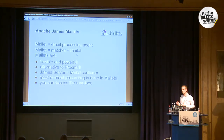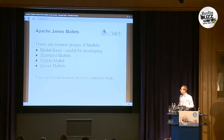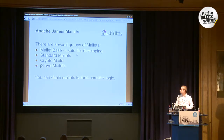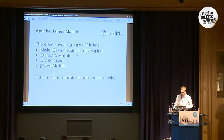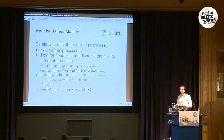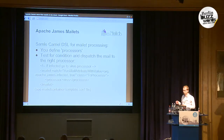You get a lot of benefits from using mailets. You can access the envelope, which you can do with procmail and other processing tools. Mailets are split into a bunch of packages. You have crypto mailets for cryptographic encryption and signing of emails, and JC mailets. You can chain them together to form complex logic when you process your emails. To configure them, you define processors — James is actually a mailet container — using a Camel domain-specific language. Here's a sample to process email identified as containing a virus.